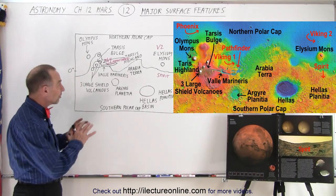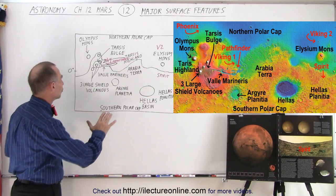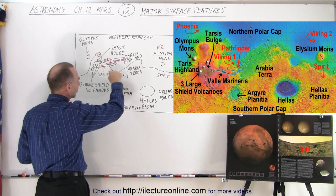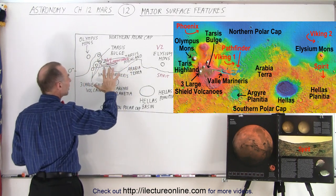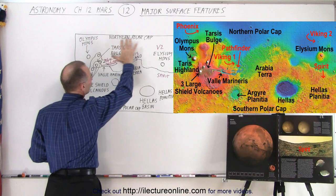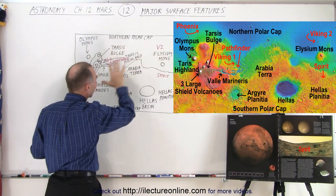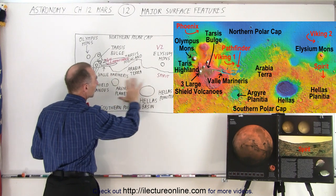First of all, Mars is kind of divided into two regions. We have the northern region and the southern region. Of course, we have some boundaries that are not straight across. But by and large, the elevation at the northern region is much smaller or lower than the elevation of the bottom region.